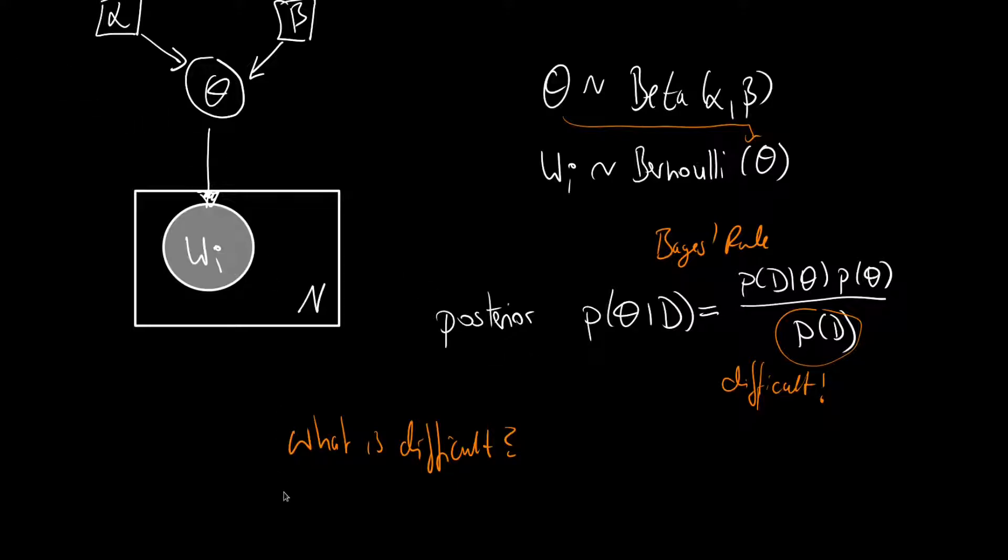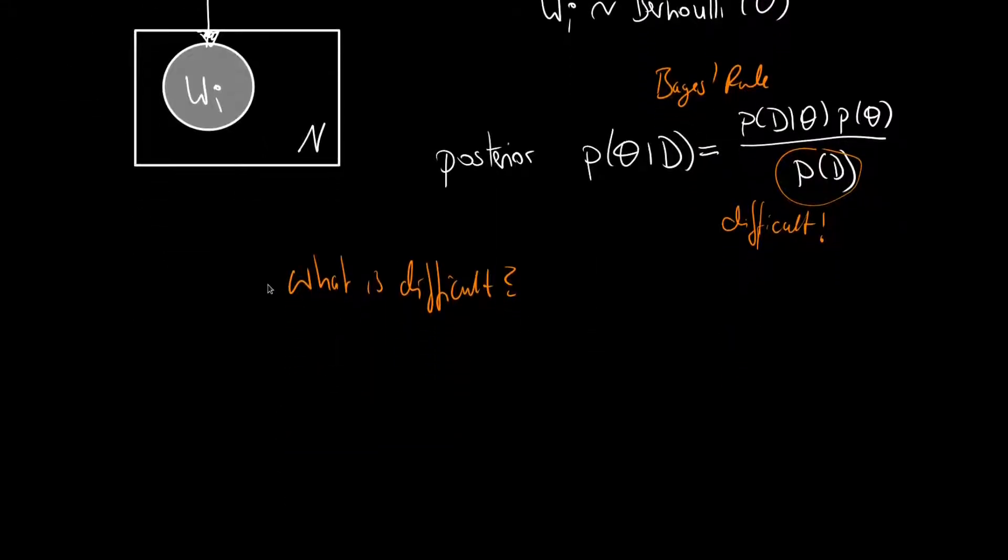So the question is, what is difficult? And we will find the answer to the difficulty here in the derivation of the marginal. But before we go there, let us start with the joint again. The joint distribution is the probability of theta and the data set.